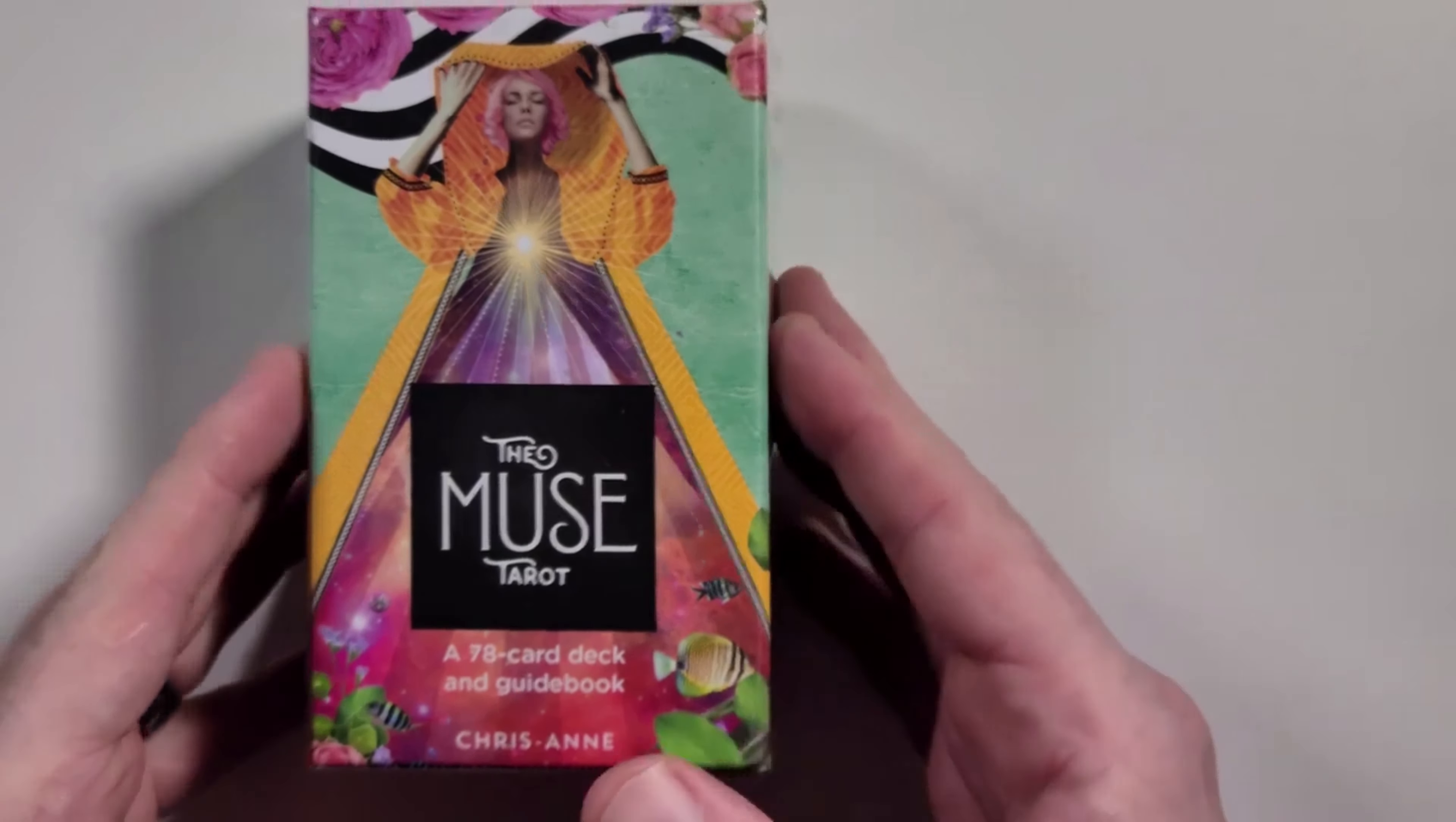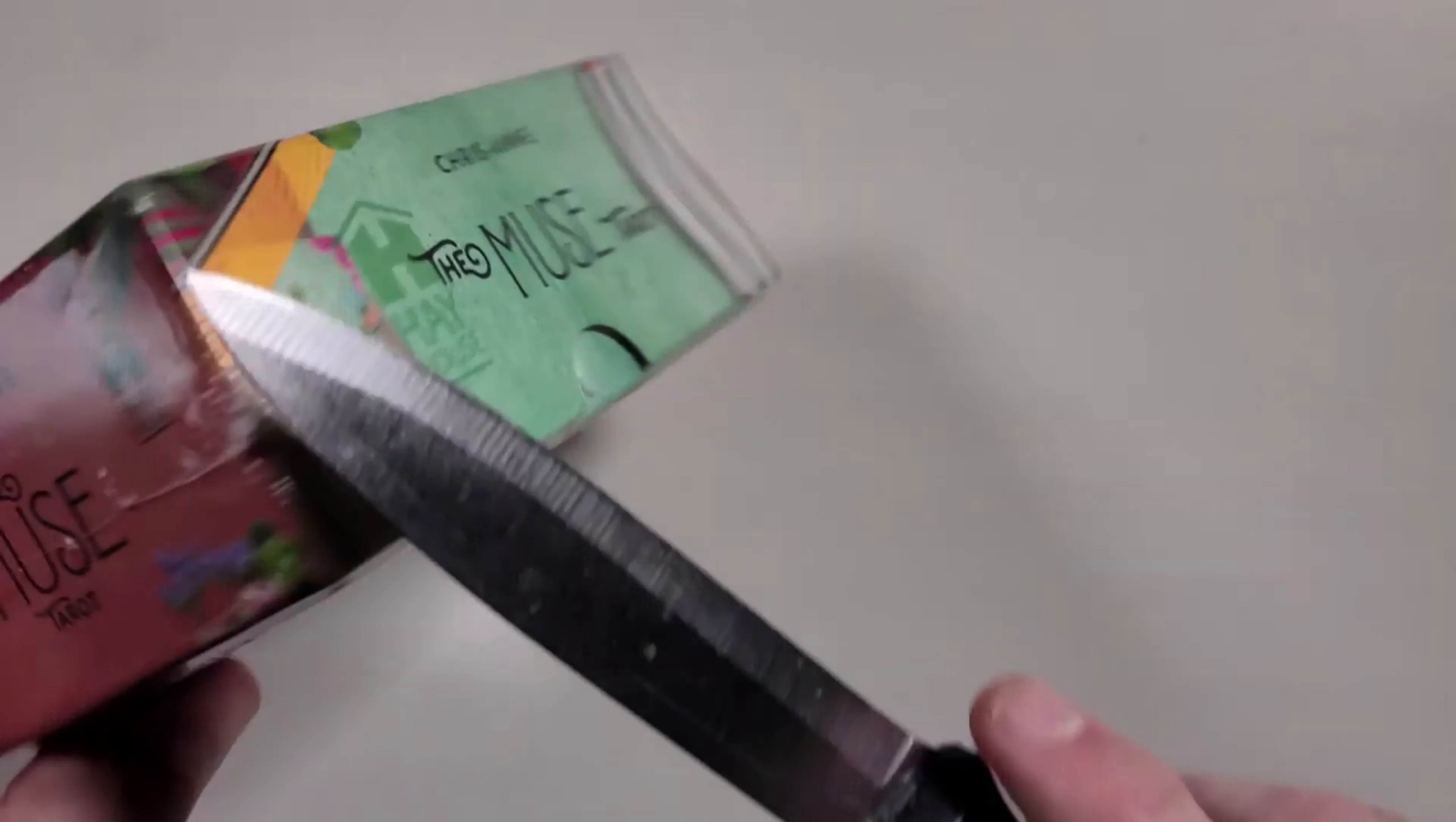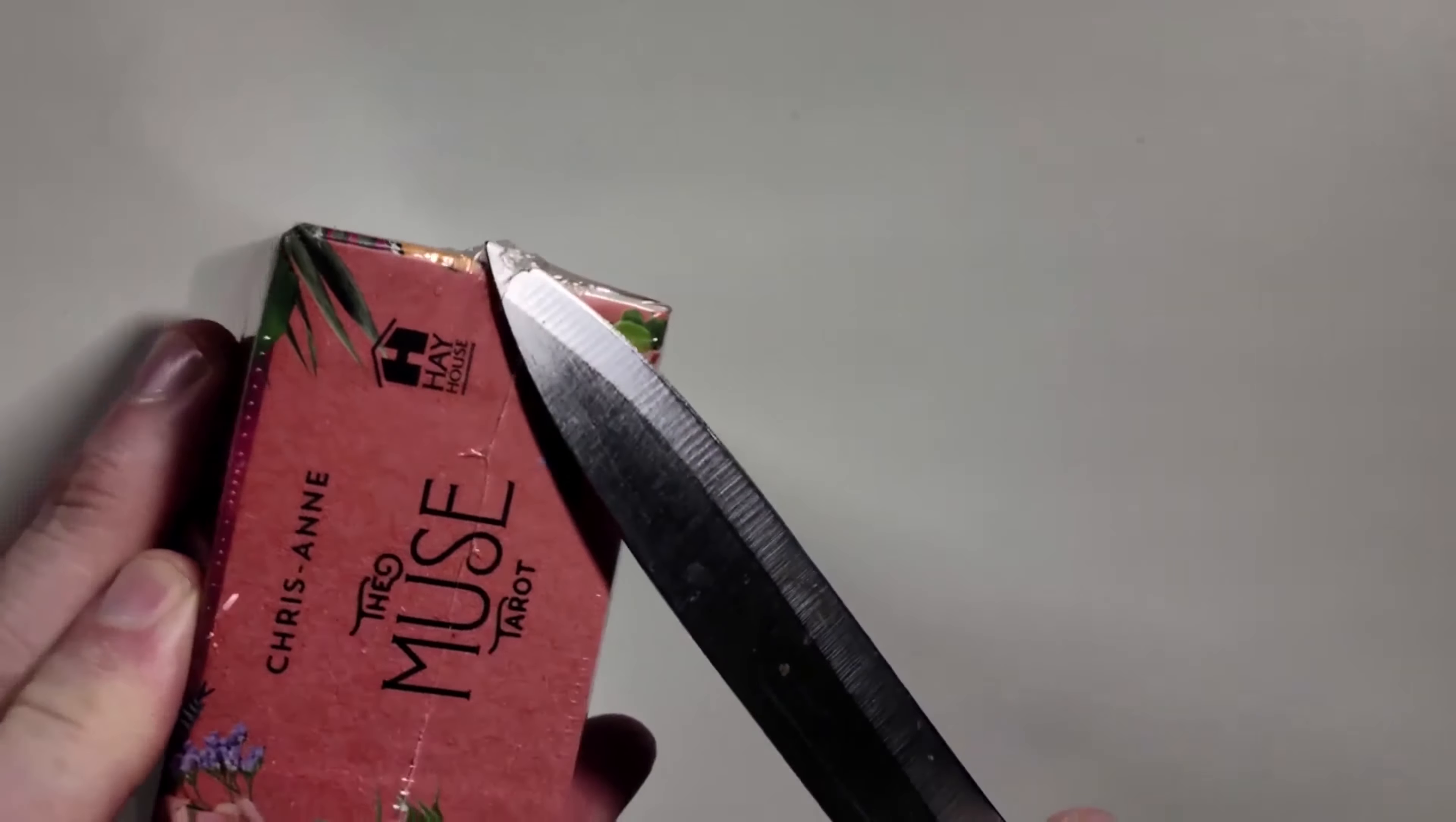So there is the Muse Tarot. There's the front of it. It is shrink-wrapped. So there's the box, the side of the box, the back, the other side, top, and the bottom. So let's take a look. We're going to open this very carefully to not scratch the box.